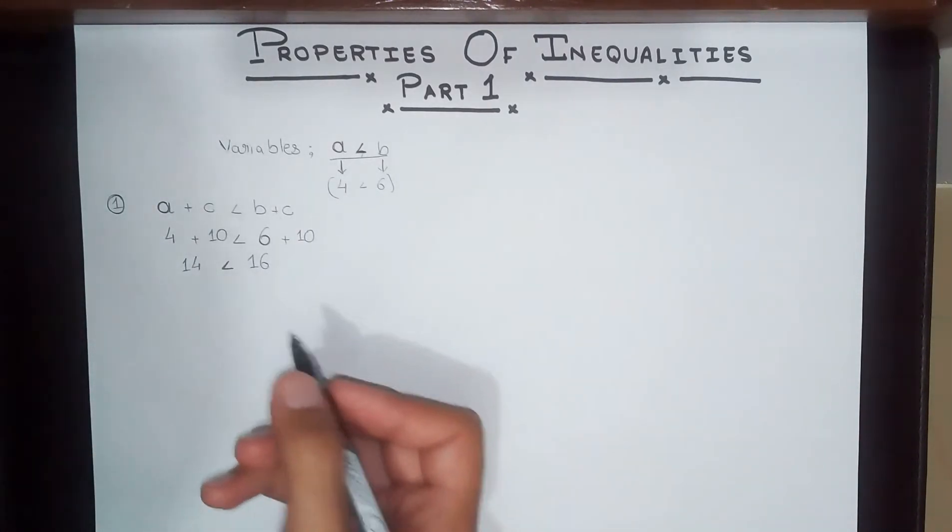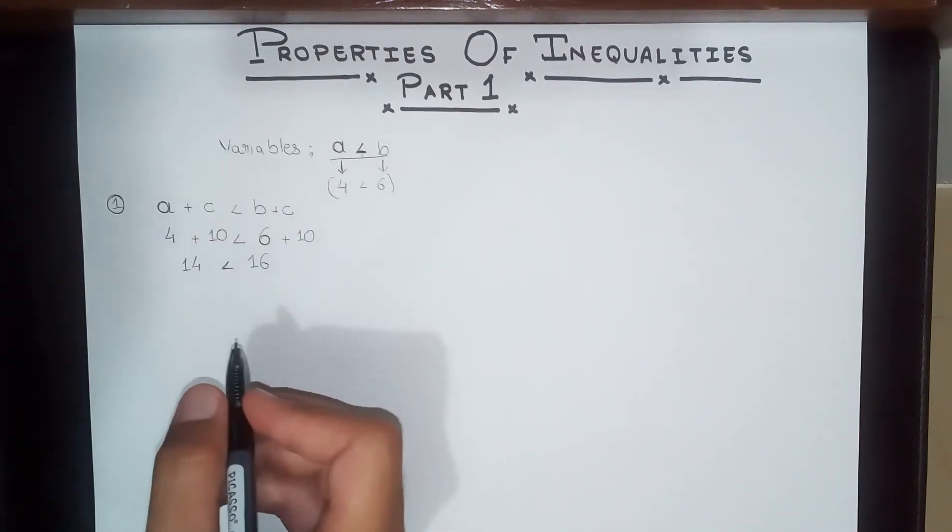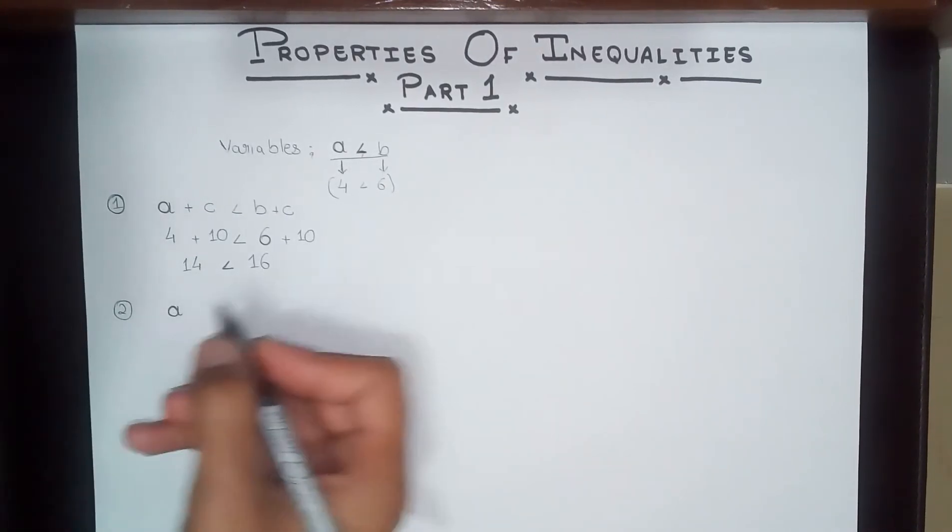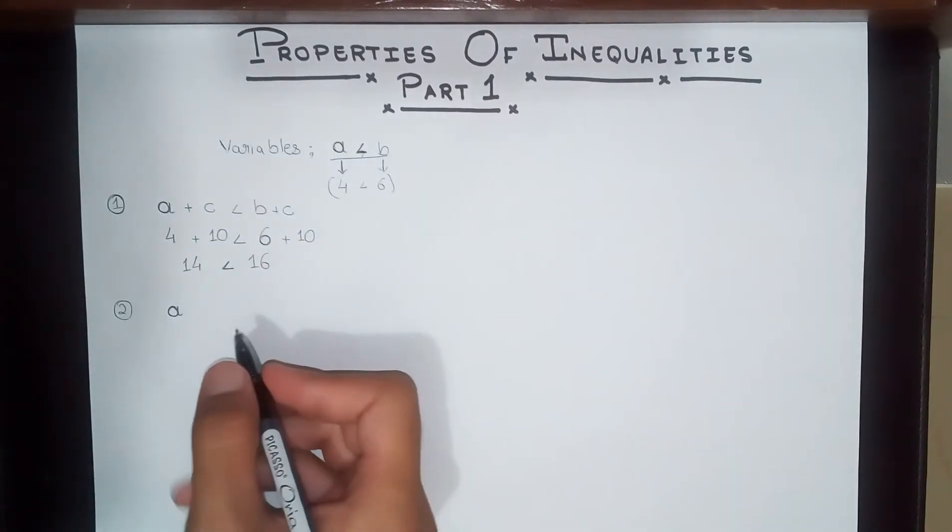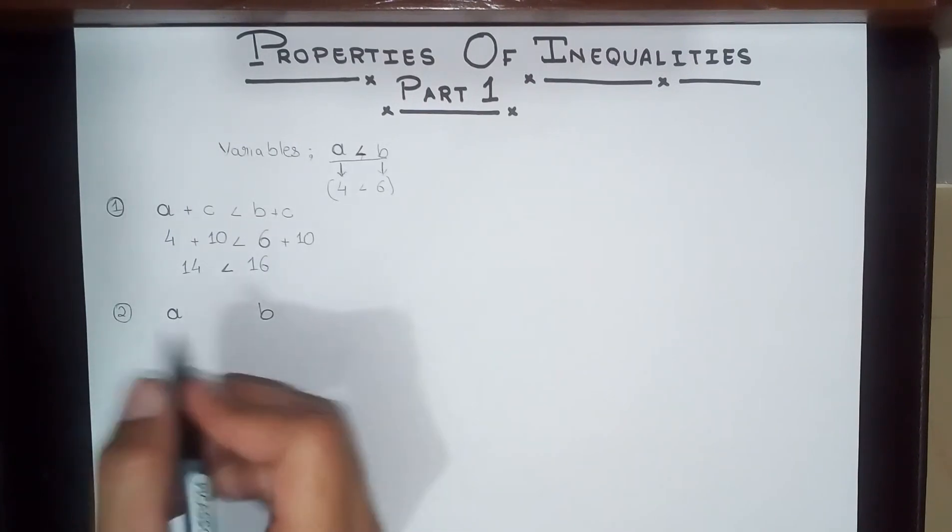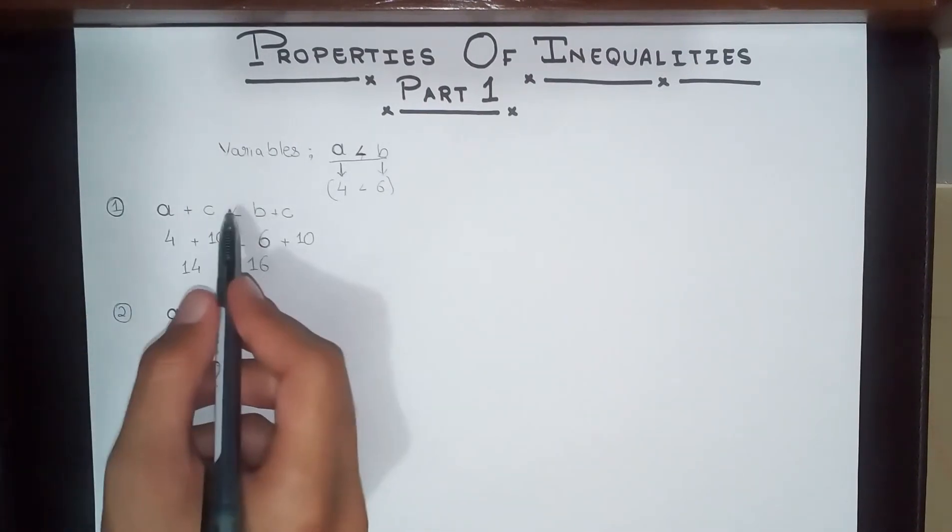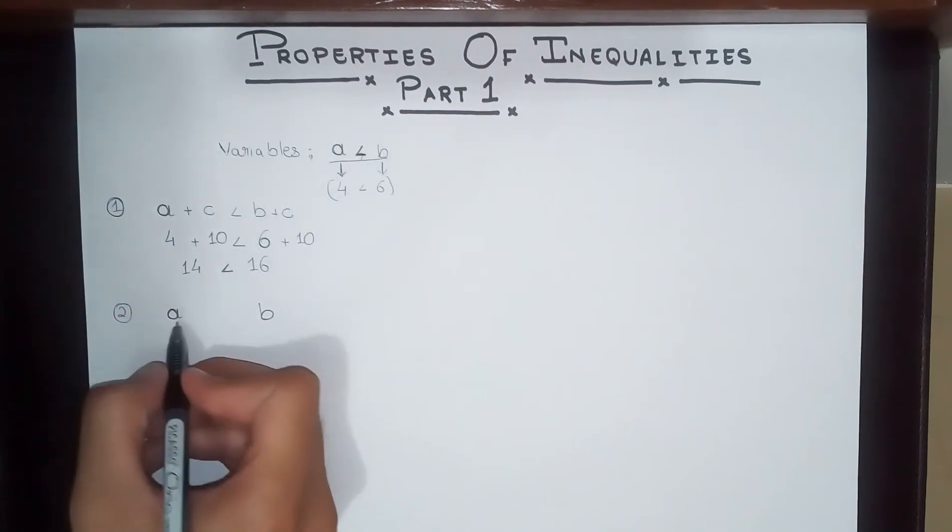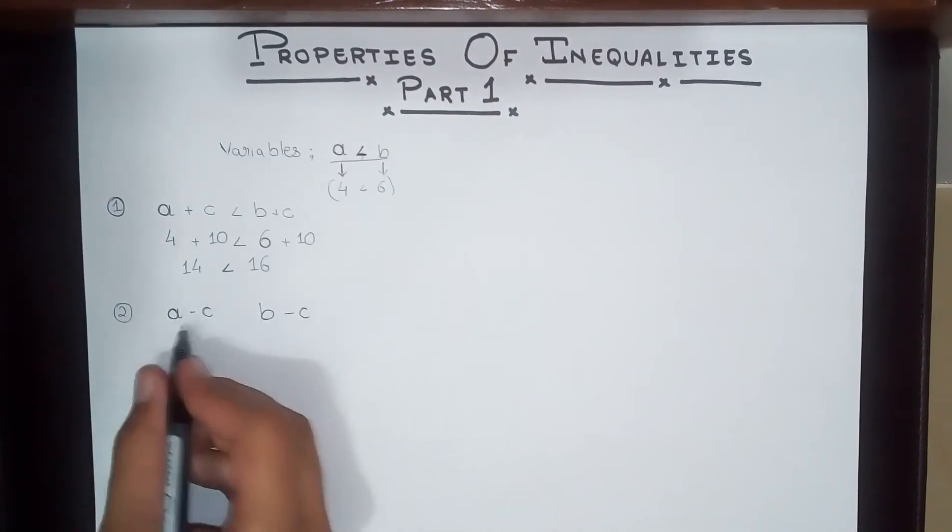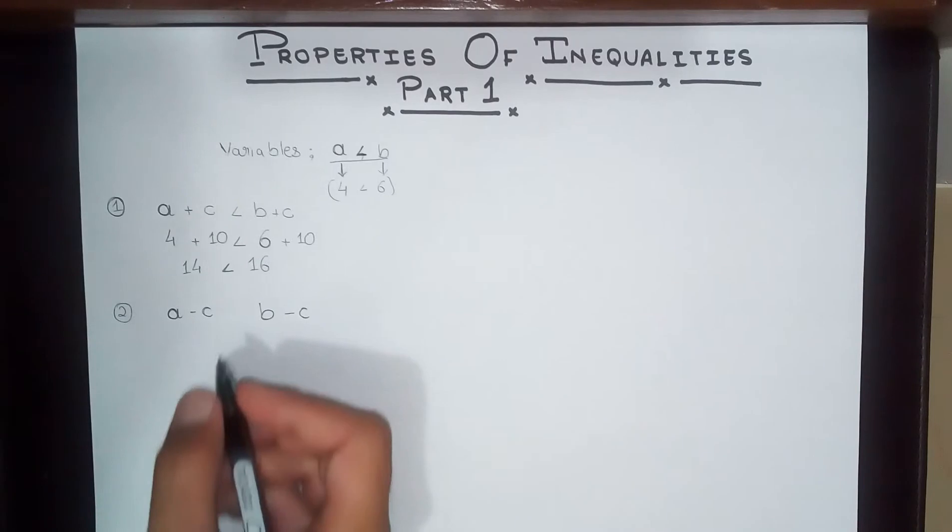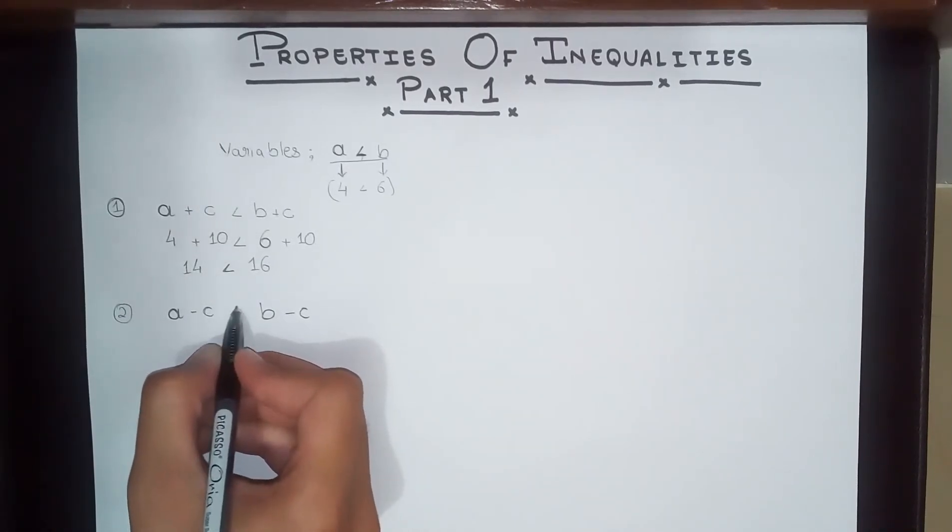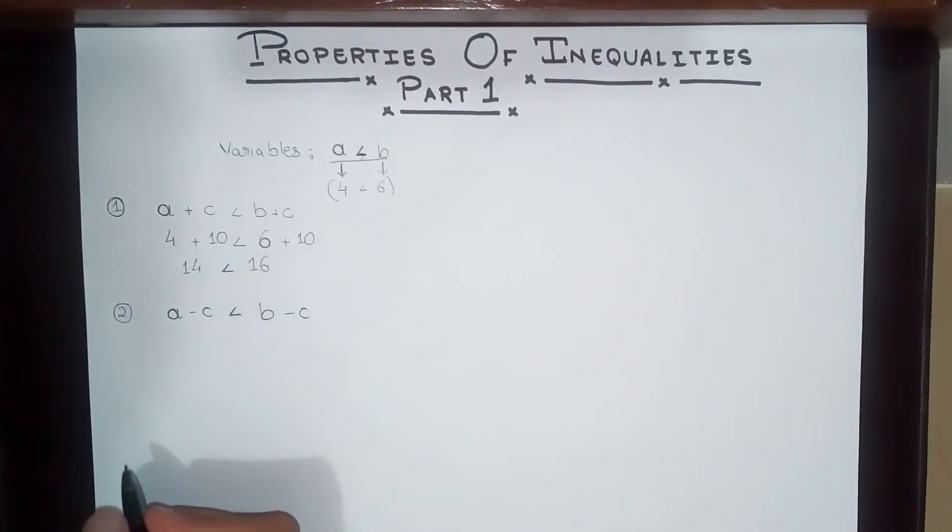We're going to be discussing the second property. If we have a number A and a number B, and you do something a little different than before—you subtract a number from both sides, the same number C—what we find is that the inequality remains the same. B is still greater than A.